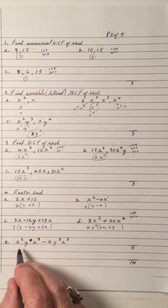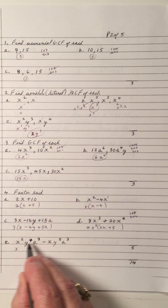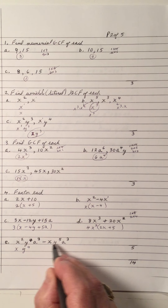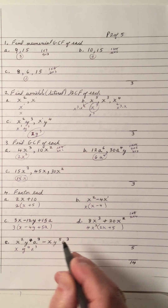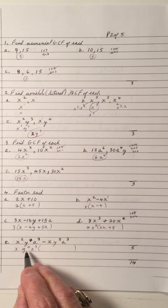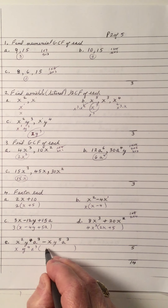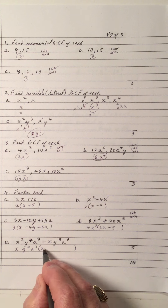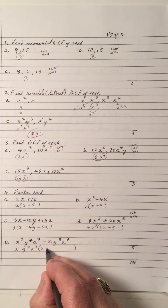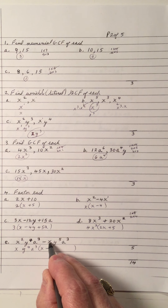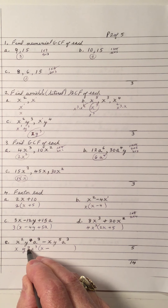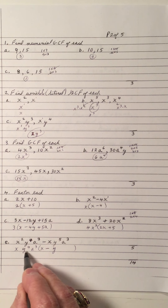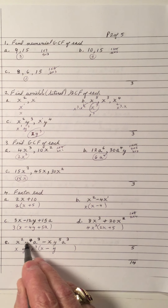For part e, there's no numerical coefficient other than one. With x in every term, smallest exponent one; y in each term, smallest exponent four; a cubed in each term. So the GCF is x·y to the fourth·a cubed. Divide: x squared by x gives x; y to the fourth divided by y to the fourth cancels; a cubed divided by a cubed cancels. For the second term: x divided by x is one; y to the five minus four is y to the one; no more a's needed. So the GCF times (x − y) gives these two terms.